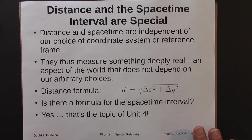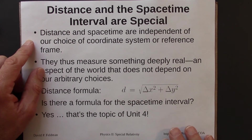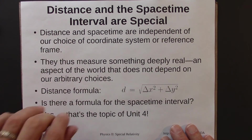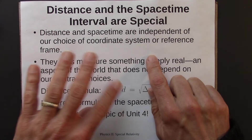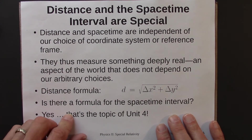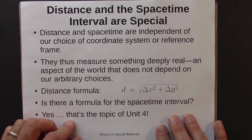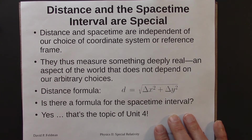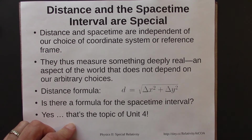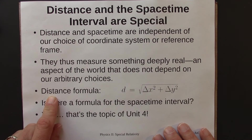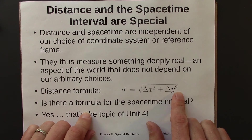Distance and the space-time interval are both special in that they're independent of our choice of coordinate system or reference frame. Regardless of what grid we use to measure, or which direction we think north is, the distance between two points in space is the same no matter how we orient our measuring devices. The same is true for the space-time interval in special relativity — no matter what reference frame you're in, the space-time interval between two events will be the same. We think of distance and space-time interval as measuring something deeply real — an aspect of the world that does not depend on our arbitrary choice of reference frame, origin, or coordinate system. Distance in studying space and geometry is fundamental, and the formula is the square root of delta x squared plus delta y squared.